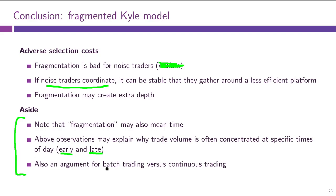Another consequence of interpreting fragmentation in the intratemporal way is that we can apply our analysis to compare batch trading versus continuous trading. Batch trading would be the consolidated market — all orders pulled together and cleared simultaneously within some time interval. Continuous trading is the fragmented market: many different markets at all the different points in time. You can apply our analysis to this comparison.